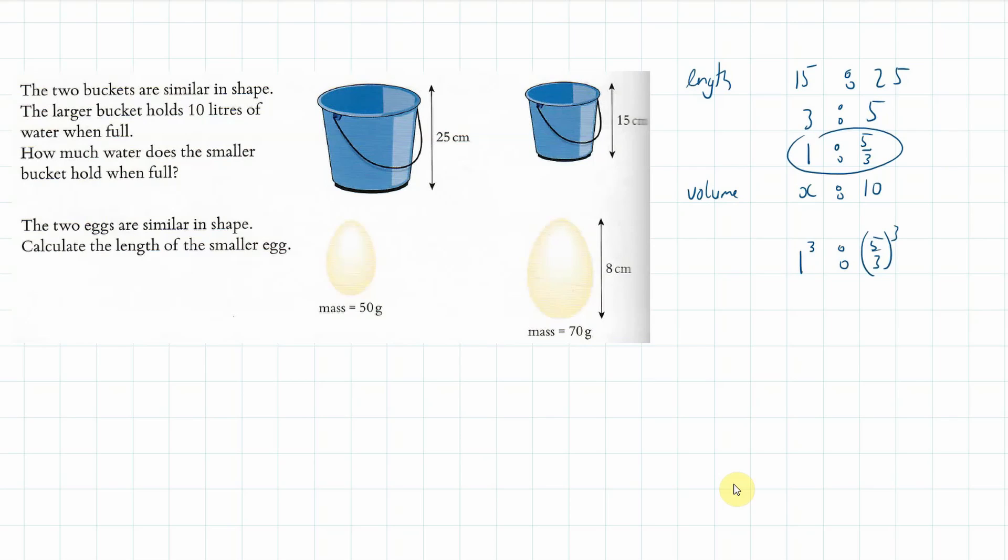And we've got to go, what's 5 cubed? So, that's 125. 5 over 3 cubed is 125 over 27. So, that's our ratio in volumes. So, I've got to go, how do I get from here to 10? So, I'm timesing by 54 over 25. And, therefore, I'm timesing this by 54 over 25, or 2.16. So, therefore, x is equal to 2.16 liters.